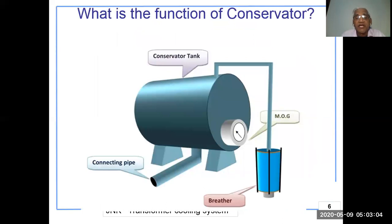From the conservator, the bottom connecting pipe goes to the transformer for communicating with the oil, and the top pipe comes out going to the breather. The breather is filled with silica gel, and the conservator also has a MOG (magnetic oil gauge) which shows the oil level.